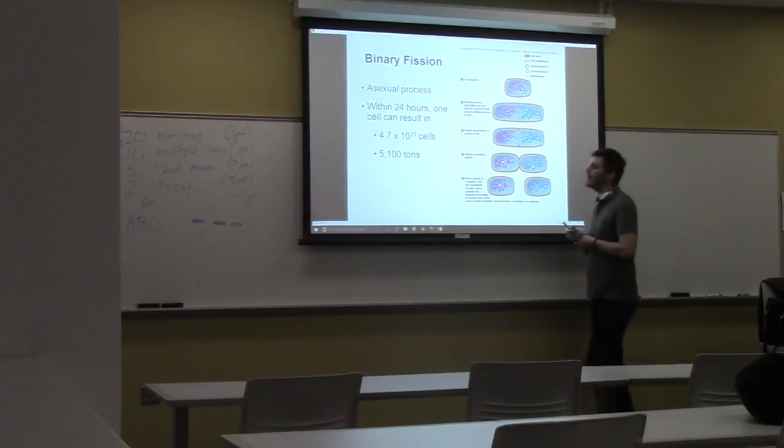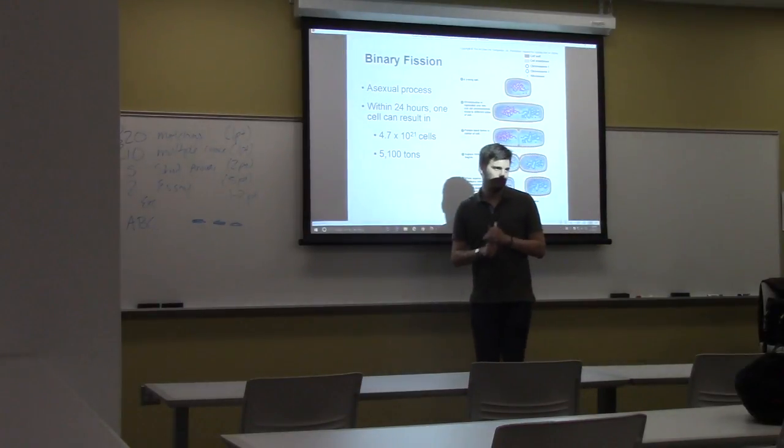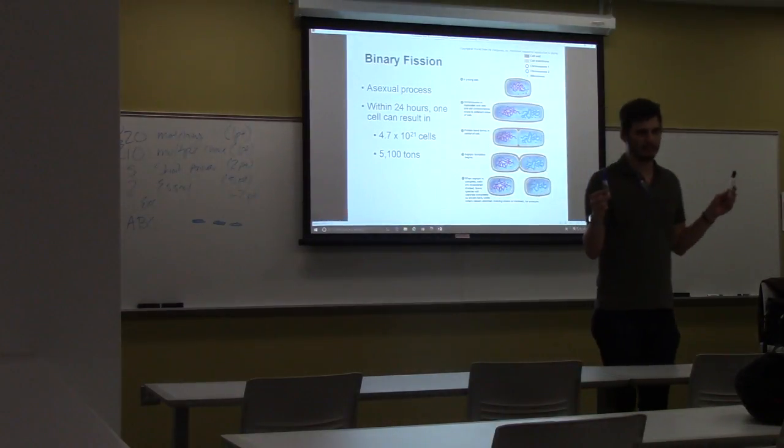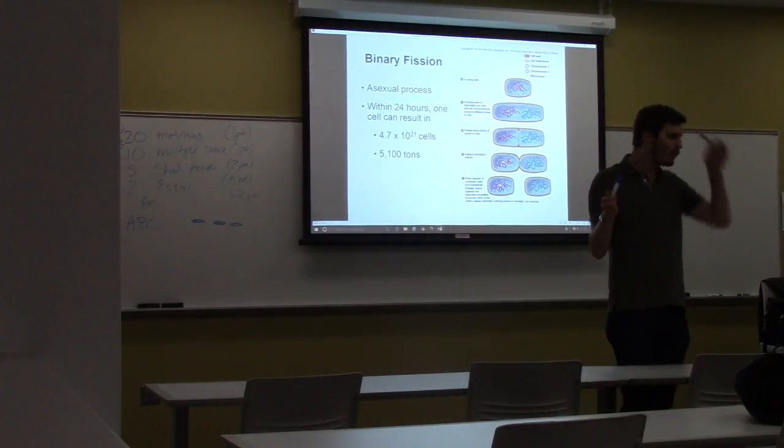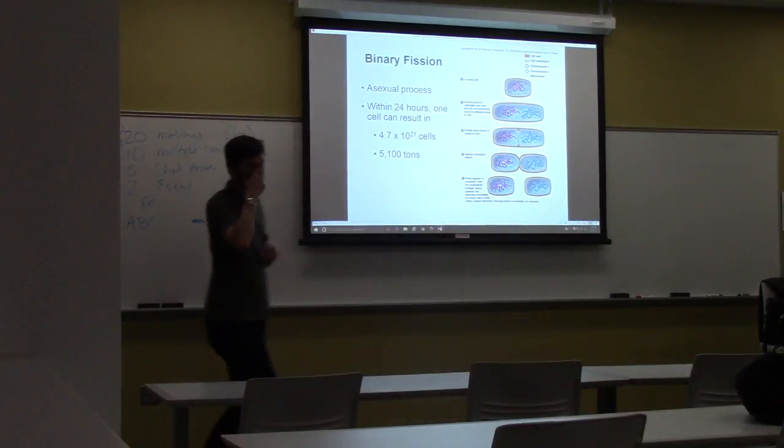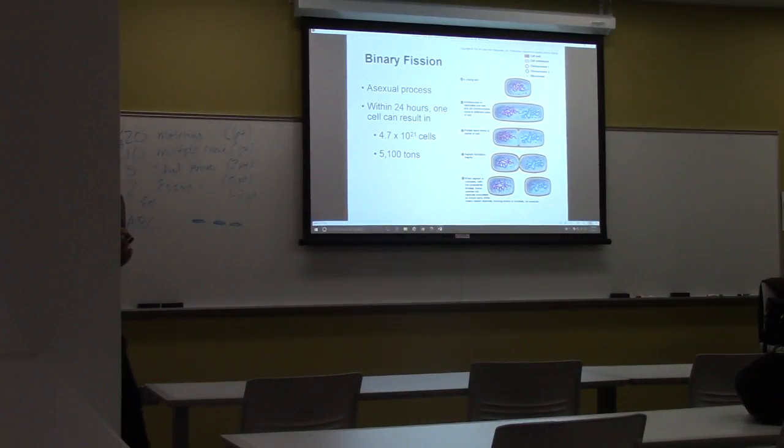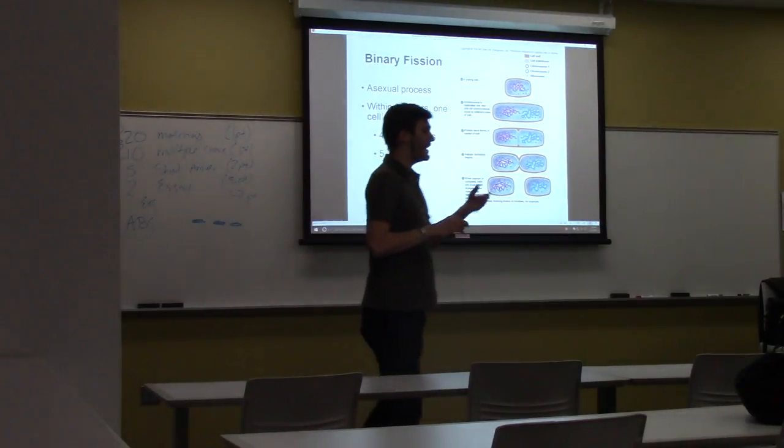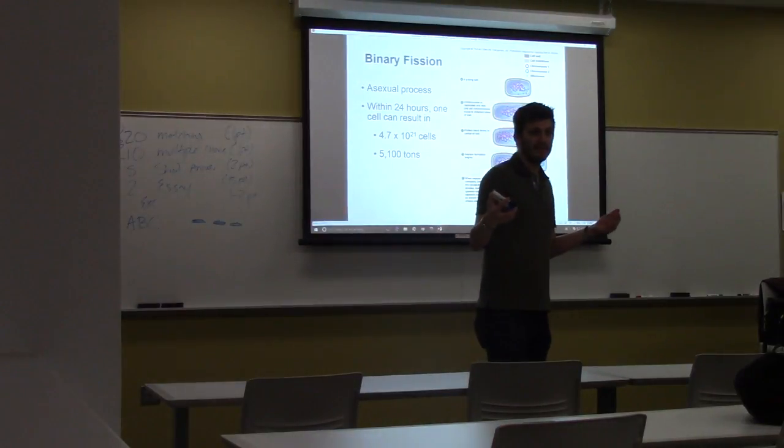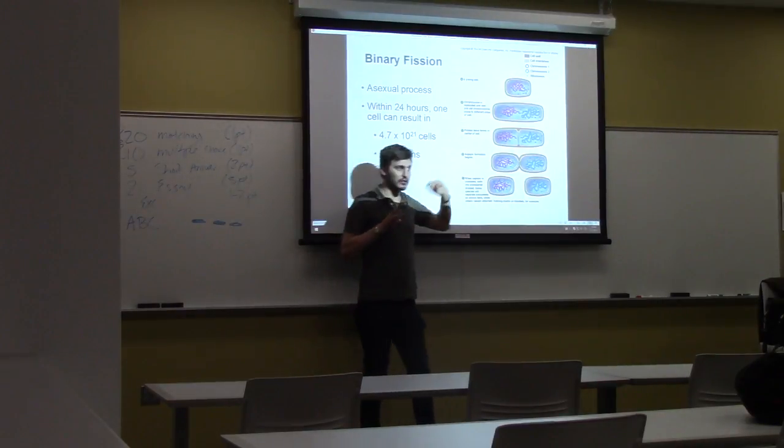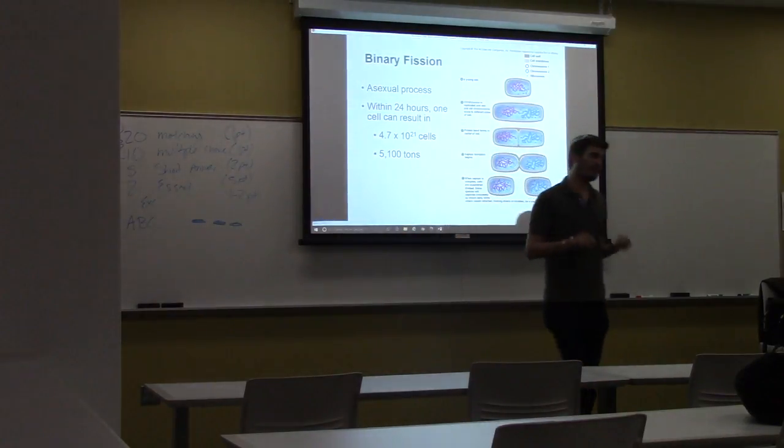Binary fission. What is binary fission? Asexual process where one bacteria becomes two, right? This is one way that bacteria can grow. Does anyone remember the other way bacteria can grow? They get fat or they make babies. So they either get fatter or they go through binary fission. Those are the two ways they can grow. Get fat or divide.